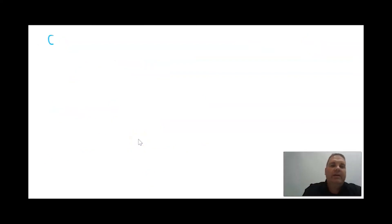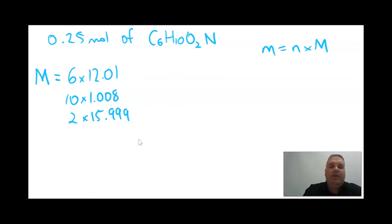This time we're looking at 0.25 moles of this made-up organic species, C6H10O2N. We need to use the formula mass equals number of moles times molar mass. So again the first thing we want to calculate is molar mass. You've got 6 lots of carbon which is 12.01, 10 lots of hydrogen which is 1.08, 2 lots of oxygen which is 15.999, and 1 lot of nitrogen which is 14.007. If you add all of those up you get a molar mass of 128.145.